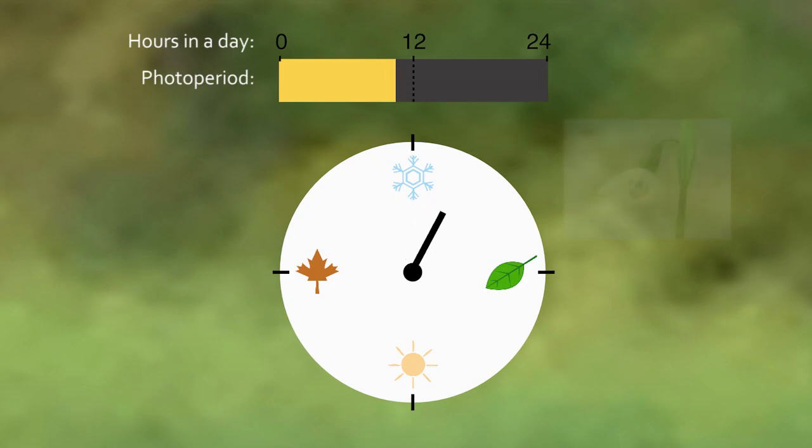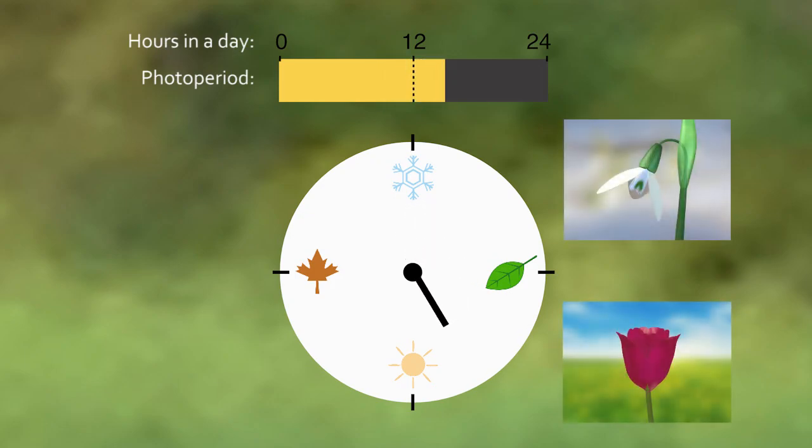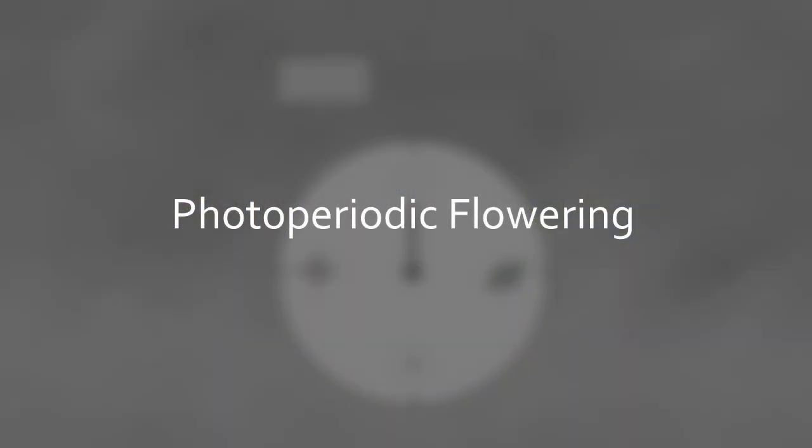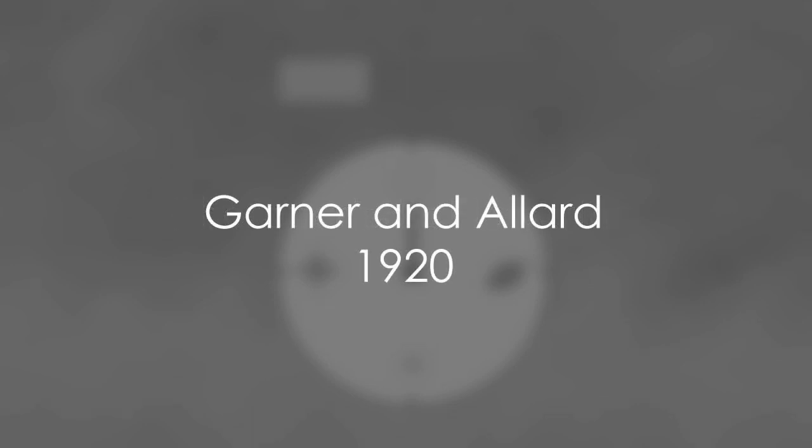Because it's so predictable, the photoperiod is the main signal the plants rely on to keep track of the seasons and to flower at the right time, a phenomenon that is called photoperiodic flowering. This process was discovered in 1920 by two researchers, Garner and Allard, after they observed that certain plant species always flower at the same time, no matter their age.